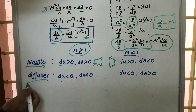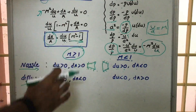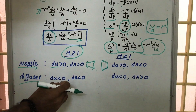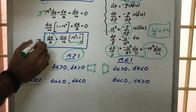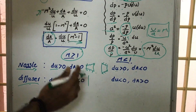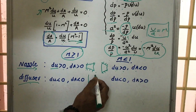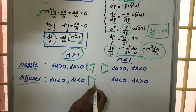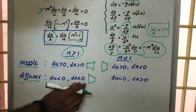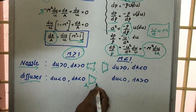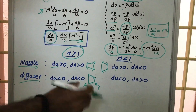For a diffuser, velocity must be decreasing, so du is less than zero. In the supersonic diffuser case (M greater than 1), du is less than zero and M²−1 is positive, so dA is less than zero — meaning the area is decreasing. Area A2 is less than A1, which gives the supersonic diffuser a converging shape.